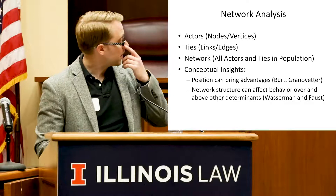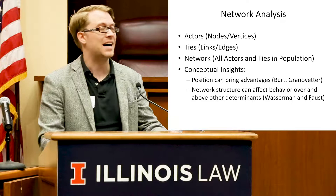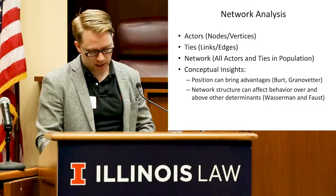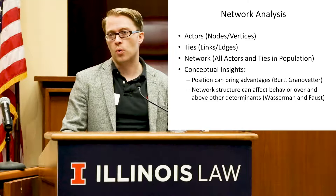Some basics on network analysis. A network has two things basically: actors and ties. Actors, also called nodes and vertices in more technical language, can be anything — people, individuals, organizations, courts, states. They can be things too, like documents.